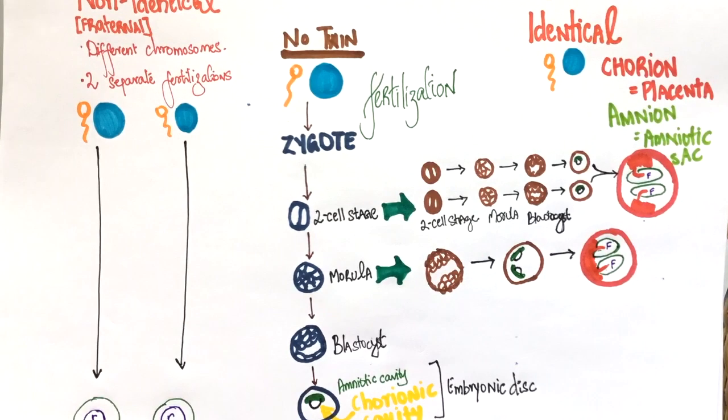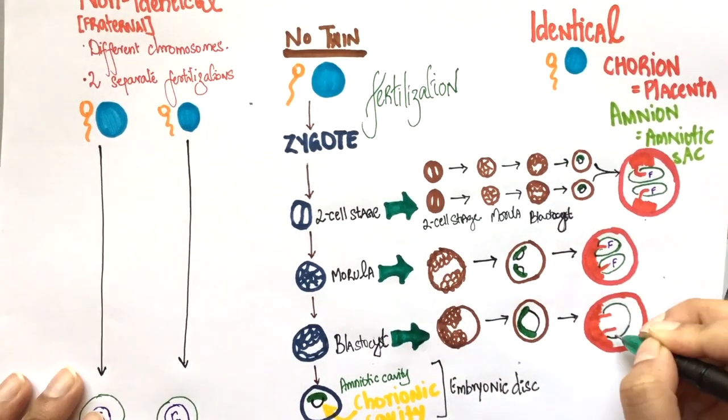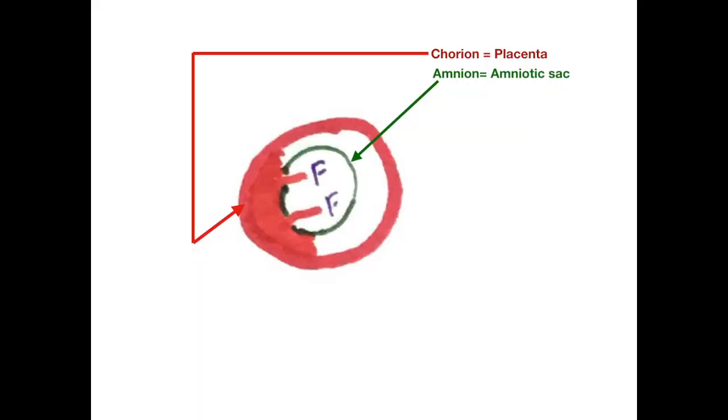If the cleavage takes place at the blastocyst stage, the twins will have just one placenta and one amniotic sac, making it monochorionic monoamniotic.